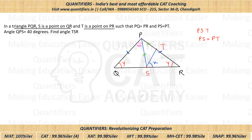Now this particular angle — the angle PST interior to triangle PST — can be seen as an exterior angle for triangle TSR. The exterior angle is equal to the sum of the two opposite interior angles, so this angle equals x plus y. And since the angle at T in triangle PST equals the angle at S, that angle is also x plus y.